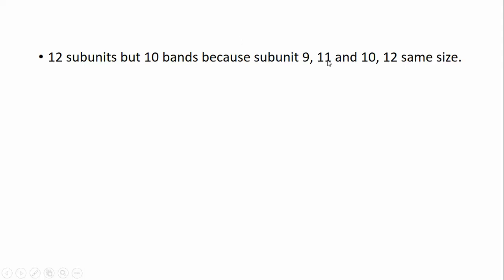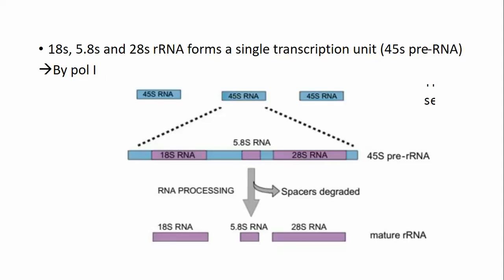To remember this: initially 10 subunits were observed and named 1 through 10. Later it was learned that subunit 9 had another associated subunit and subunit 10 had another, so these were named 11 and 12 respectively. Subunits 9 and 11 were of similar sizes, as were 10 and 12, and so could not be distinguished initially.